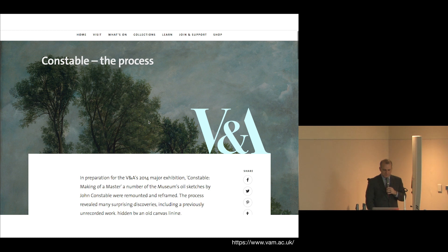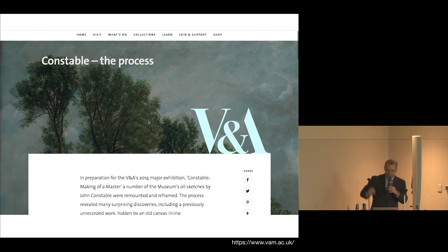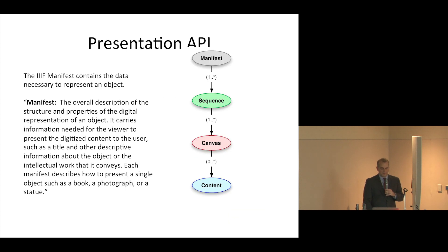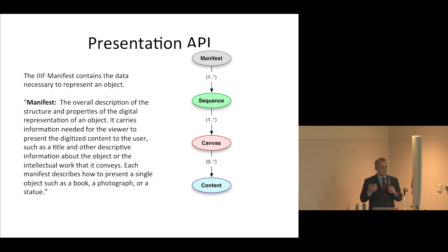They use this application to drive a rendering online that draws images live and requests overlaid images in the correct dimension and region. The objective of the Presentation API is to provide the information necessary to allow a rich viewing experience in a software client, likely in conjunction with the IIIF Image API. The core object in the Presentation API is the manifest, which contains the data necessary to represent an object — its structure, sequence of images, and display metadata.